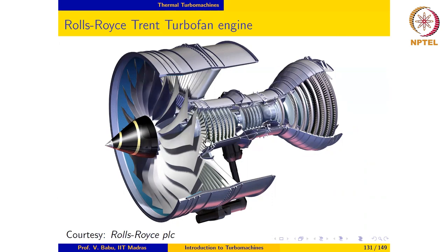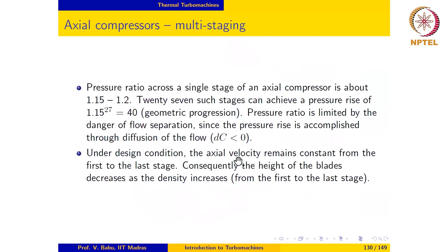The engine needs to be able to handle this in a robust and efficient manner so that fuel economy is good. When the mass flow rate requirement or thrust requirement reduces, the rotational speed of the rotor also decreases. All these factors change the operating condition; for instance, under design operating conditions the axial velocity remains constant, but when the mass flow requirement or RPM of the engine changes, the axial velocity will also have to change.